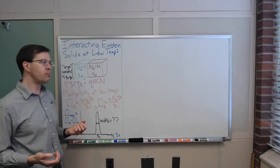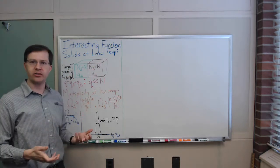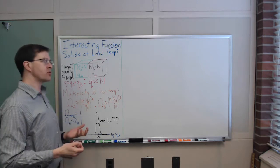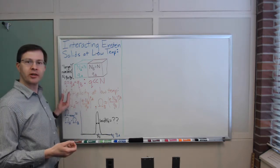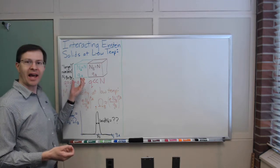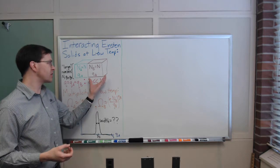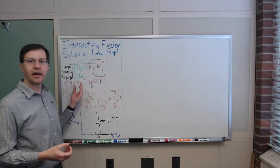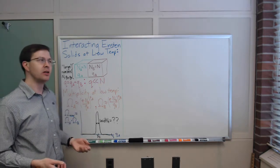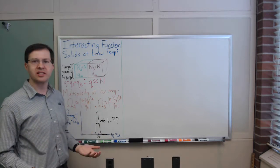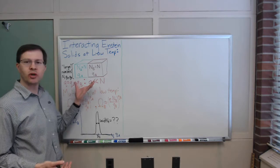The microstates of the system are based on exactly which oscillator in which solid has how much energy. The macrostates are labeled by Q_A — how much of the total energy Q is in solid A right now. We might start with lots of energy in solid B and very little in A, then let them interact and ask: what is the most likely eventual state?